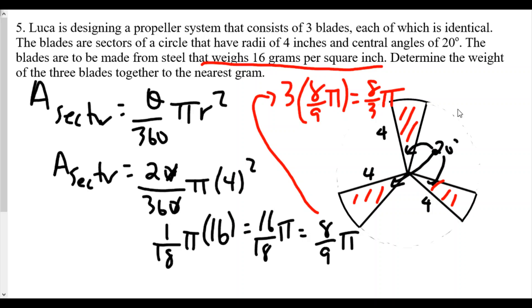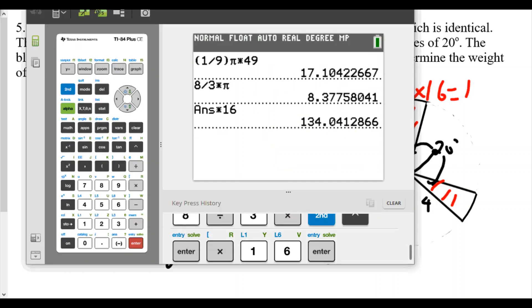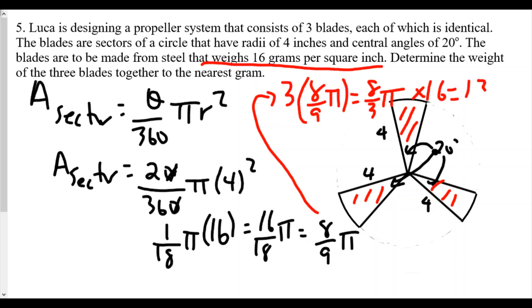So in this case, we multiply it by 16, we get 134.04. And so here, to the nearest gram we get in this case 134 grams. So that's going to be our total weight of the propellers.